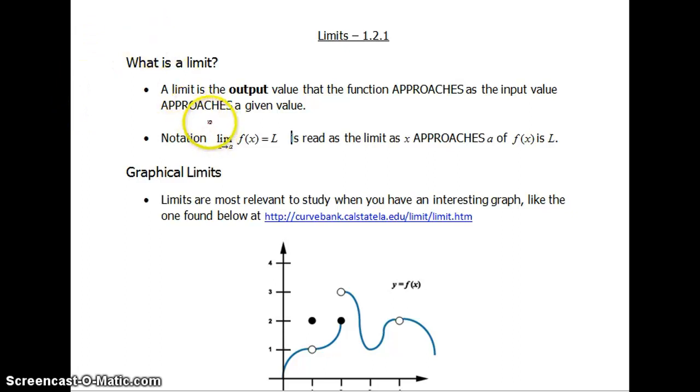So some notation here that I have is the limit as x approaches a of f(x) equals L. So what that means is that the given value is your a, so that's the x value you're gonna be looking at. And you're gonna have to figure out the y value or the output, which is your L, that your y values are approaching.